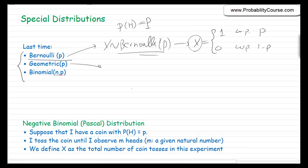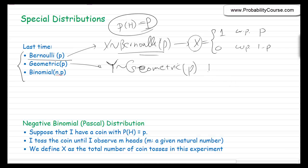We also talked about Geometric(p). Consider the same coin — you toss it until you observe the first heads. The probability mass function of y is: P(y = k) = (1 − p)^(k−1) · p, where k can be any number from 1, 2, 3, and so on.